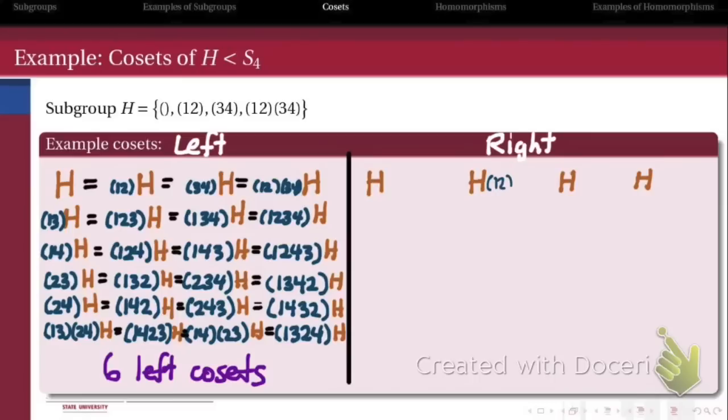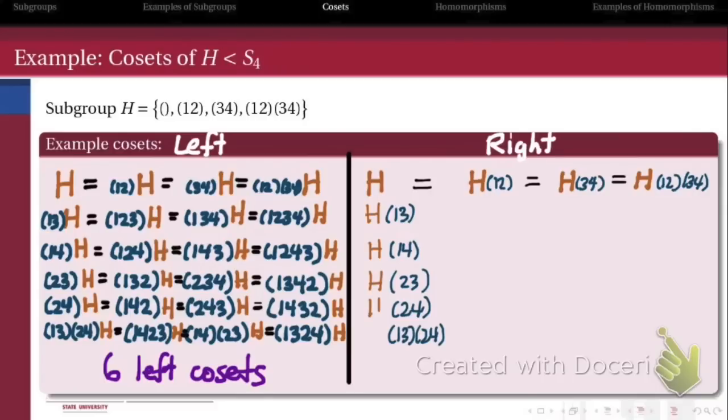Then we look at the right cosets. Again, if I operate on the right by one of the elements that was originally in H, I'm just going to get H again. If I operate on the right by any one of these other elements, (1,3), (1,4), (2,3), (2,4), and (1,3)(2,4), I end up getting distinct right cosets again.